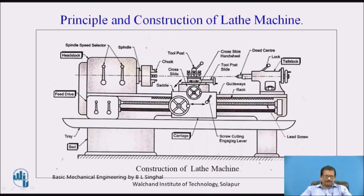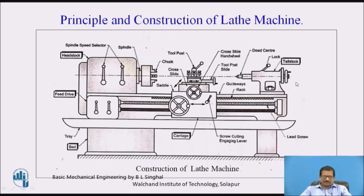If we want to carry out reaming — which is carried out after drilling — we hold the reamer in it and move it along the axis to remove a small amount of material, giving a finished surface and the reamed size. In the case of tapping, we can hold the tap in it. This spindle moves when we rotate the tailstock wheel, since the tailstock spindle is mounted on a screw. Rotating the wheel moves the spindle forward or backward. The total tailstock assembly can also be moved towards the headstock or back to its original position depending upon the job length, and by rotating this wheel we can make the dead centre support the component.